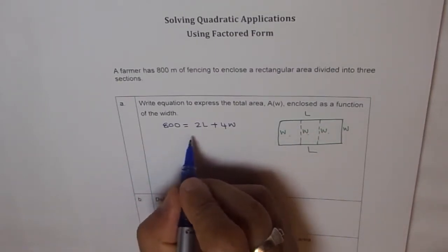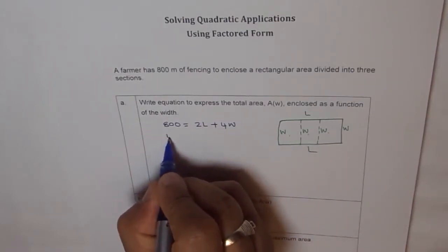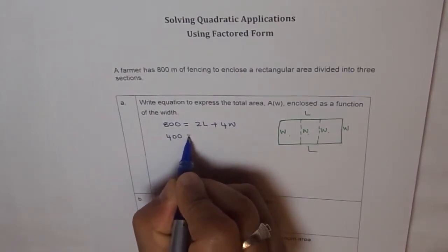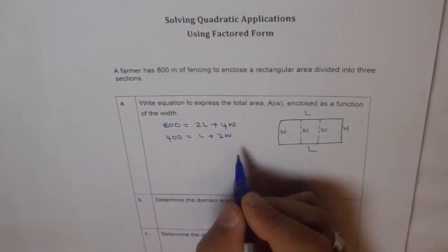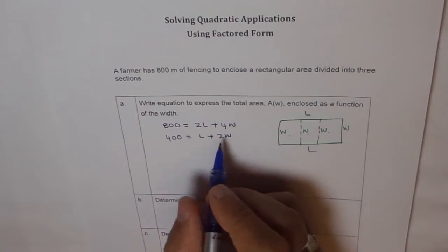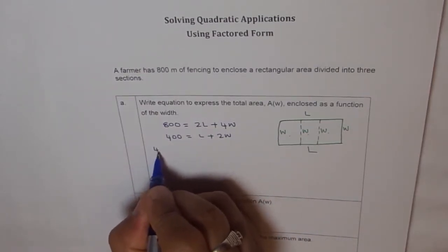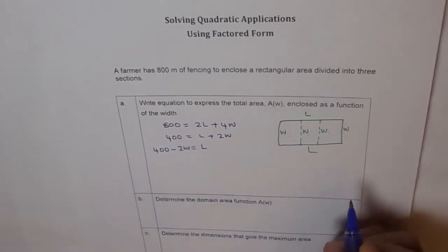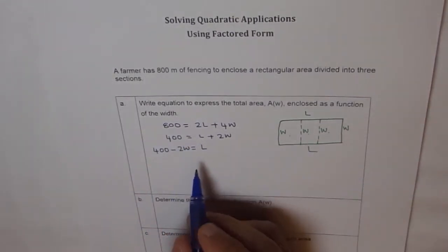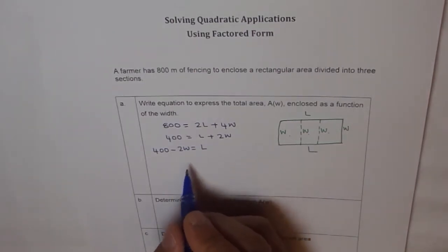So we will solve for L. We can divide by 2 all the things at present. So when we do that, we get 400 equals to L plus 2W. So we simplified it by dividing by 2. Now, from here, we can bring 2W here and we say 400 minus 2W equals to length L. So now we know L in terms of width W.